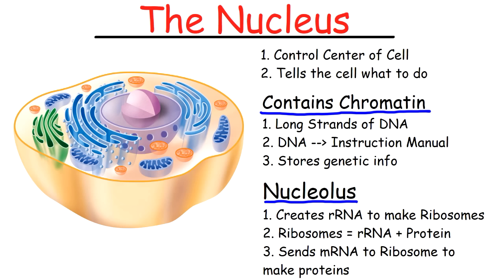Inside the nucleus, you have long strands of DNA known as chromatin. The DNA is basically the instruction manual or the blueprint of the cell — it stores the genetic information of the cell. Within the DNA, you have the instructions on how to make the proteins, how to make the individual organelles of the cell, and what they need to do.